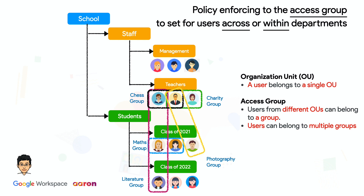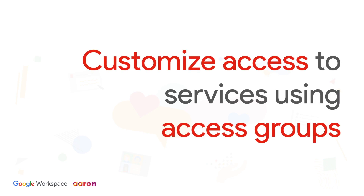Therefore, this type of grouping allows users to get customized services. In Google Workspace, you can turn on services for a group of users rather than an entire organizational unit. This allows you to control specific users without changing your organizational structures. For example, you can let a group approve YouTube videos or share Drive files across or within the department, even with people outside of your organization.